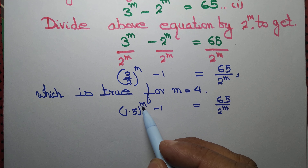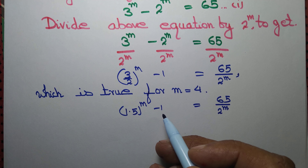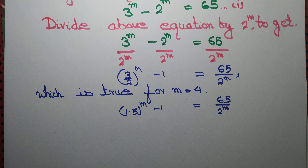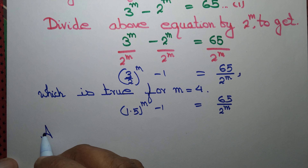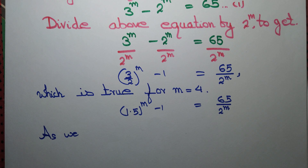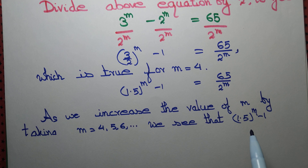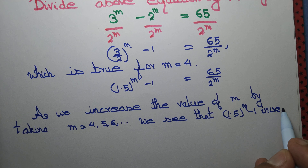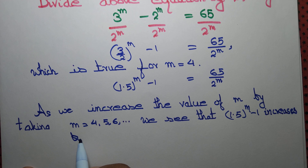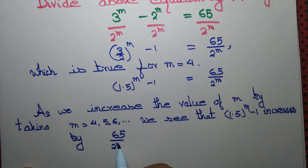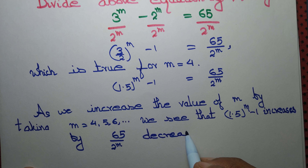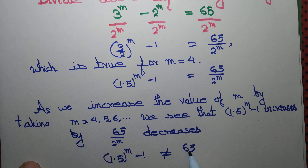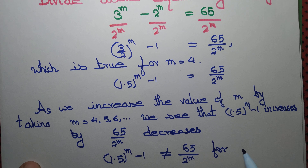As you increase the value of m from 4 to 5, 6, 7, 8, 1.5 to the power m minus 1 will also increase. However, 65 by 2 to the power m will decrease, so they will never be equal. So we can say that 1.5 to the power m minus 1 is not equal to 65 by 2 to the power m for m greater than 4.